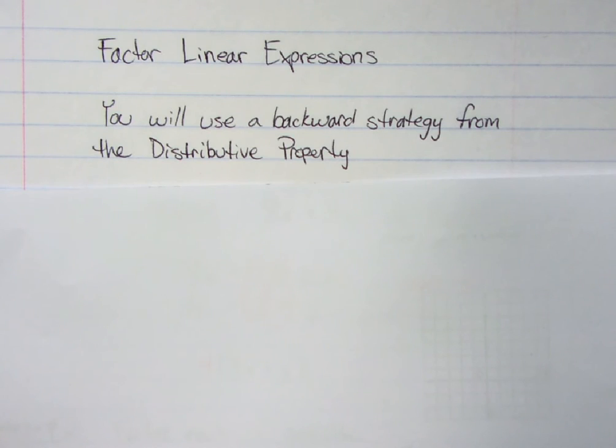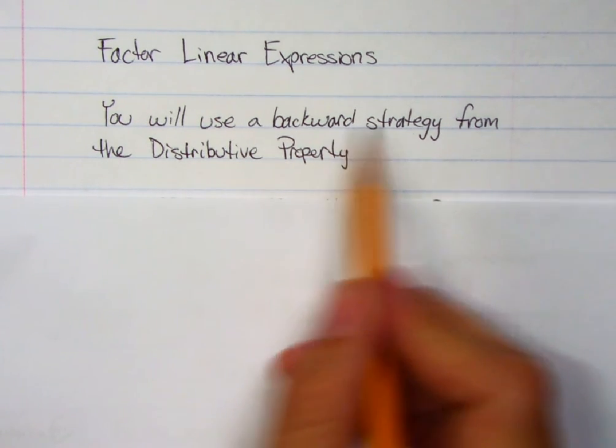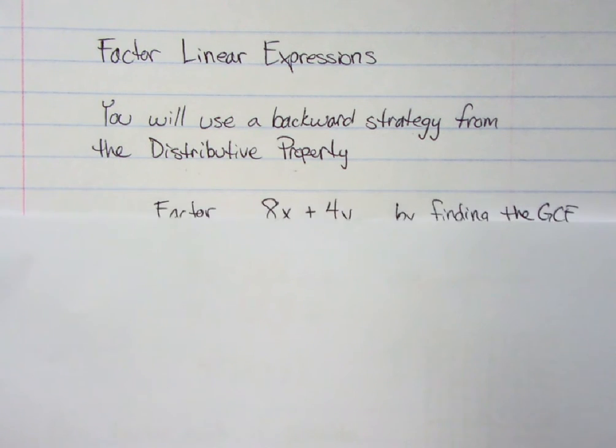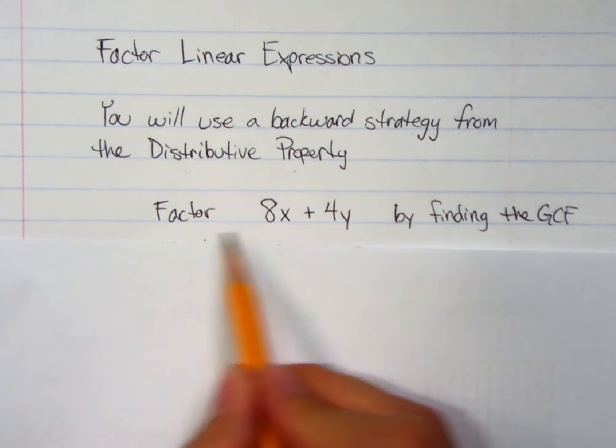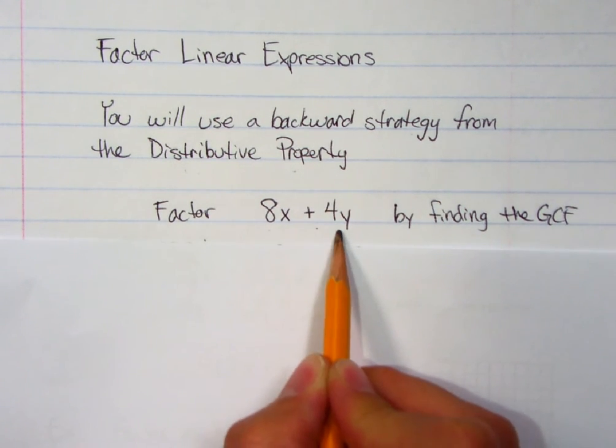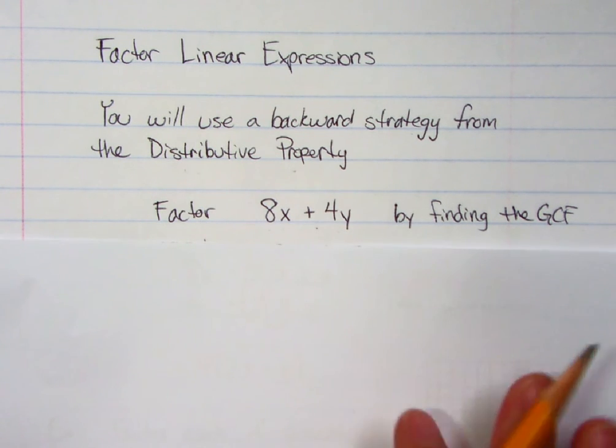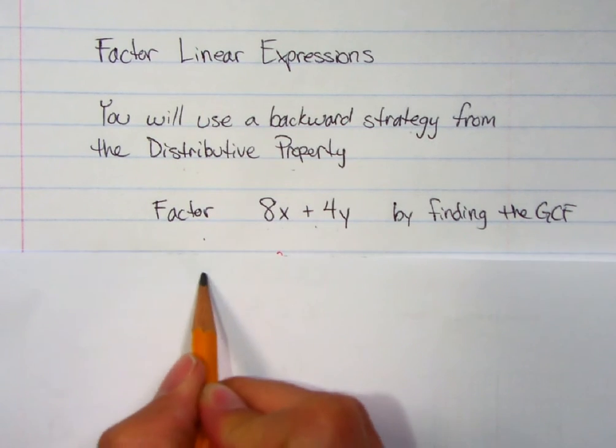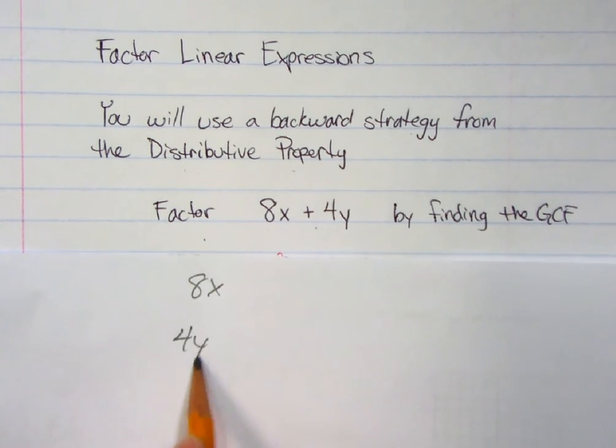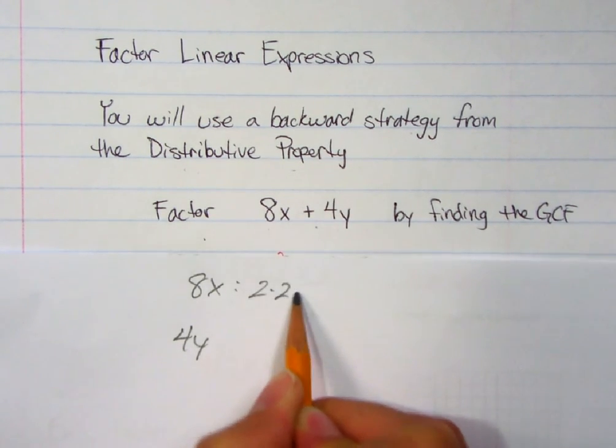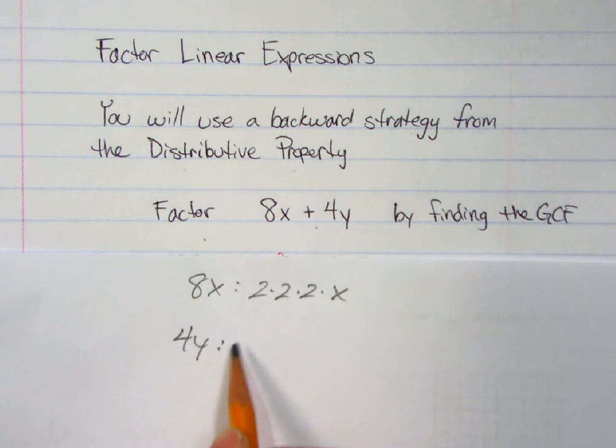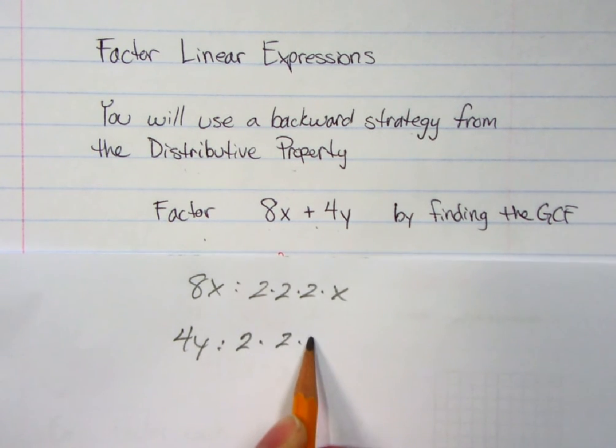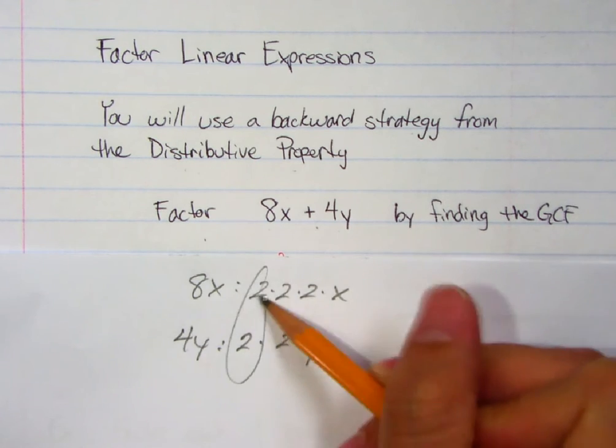All right, we're going to factor some linear expressions. Now we're going to apply everything that we learned there. We're going to basically do the backwards strategy from the distributive property, going backwards. So let's take a look. Factor 8x plus 4y, 8x plus 4y, by finding the GCF. Okay, let's take a look at what I do here. So if these are the two terms, 8x and 4y, I'm going to go and break them up into smaller pieces. All right, their prime factors.